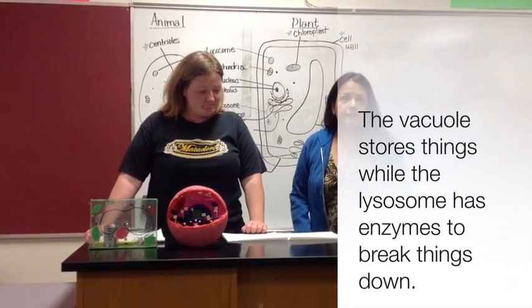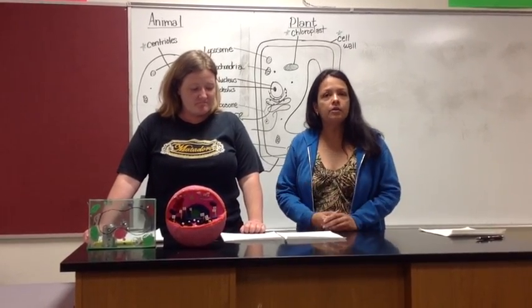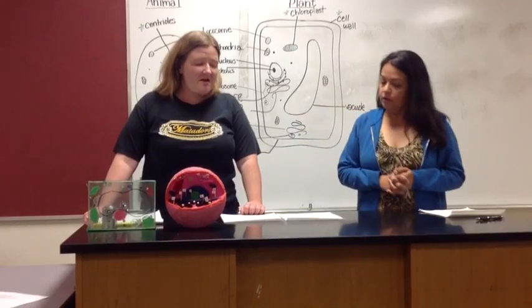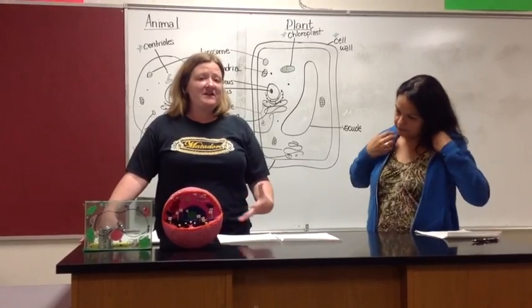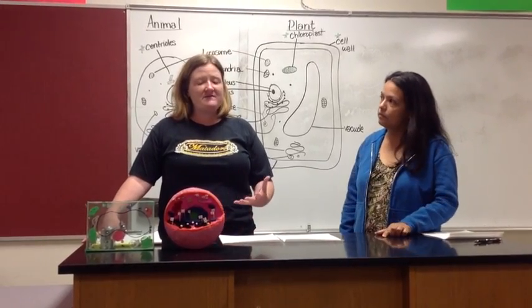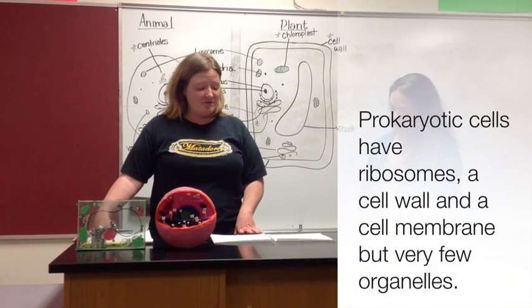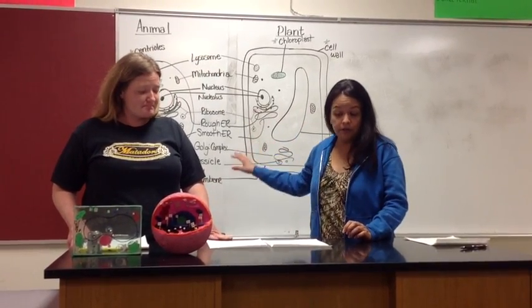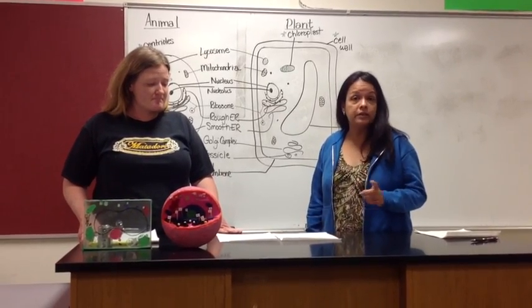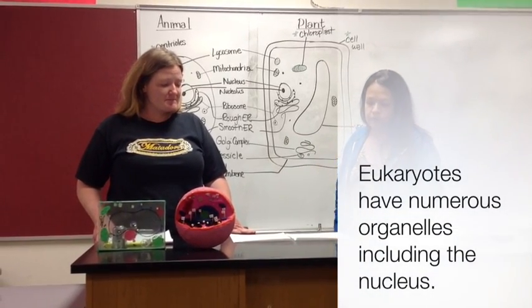Throughout this lesson we've heard a lot of information, so let's go over the differences between a prokaryotic cell and a eukaryotic cell. Prokaryotic cells are very simple — they do have some organelles but they're very limited: ribosomes, cell walls, and a cell membrane, but other than that they have very few organelles. Eukaryotes, on the other hand, have numerous organelles including the nucleus, which is the most important one we usually associate with eukaryotic cells.